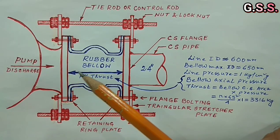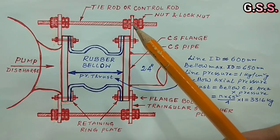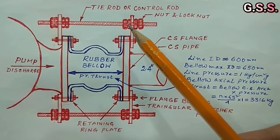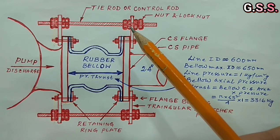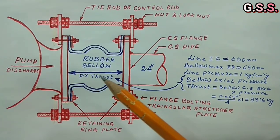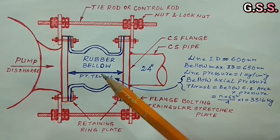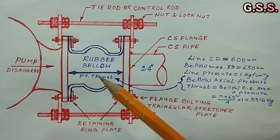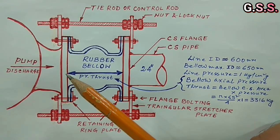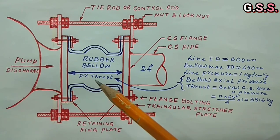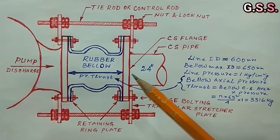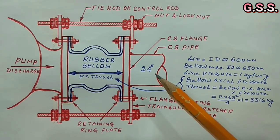But if we do not provide the tie rod or if we do not keep the tie rod nuts tight then this axial pressure thrust will be transmitted to the piping system and to the connected nozzle. Also bellow will be expanded axially and finally bellow may be turned off.